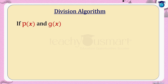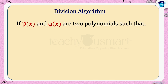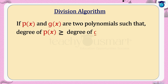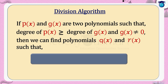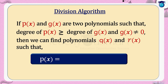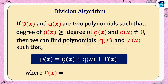In the previous session we learned the division algorithm of polynomials. If p of x and g of x are two polynomials such that the degree of p of x is greater than or equal to the degree of g of x, and g of x is not equal to zero, then we can find polynomials q of x and r of x such that p of x equals g of x multiplied by q of x plus r of x, where r of x is either zero or the degree of r of x is less than the degree of g of x.